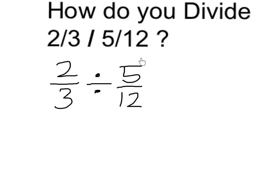So here we're seeing how many times 5 twelfths divides into two-thirds. 5 twelfths is a little less than a half, so it's going to go into two-thirds more than one time.